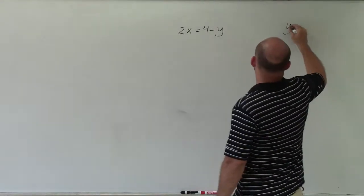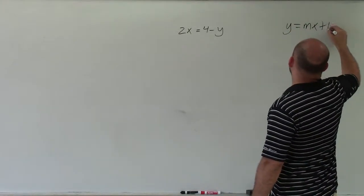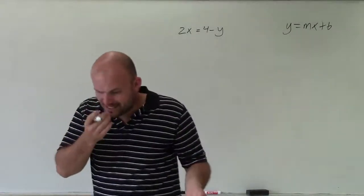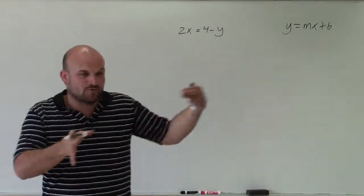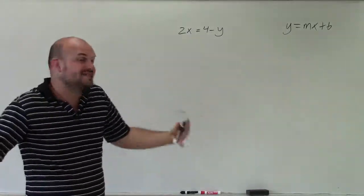So remember, slope-intercept form is y equals mx plus b. Now, to get to that, one thing we can always do is just isolate the variable. It doesn't matter if y is on the left side or the right side. Just isolate the variable.